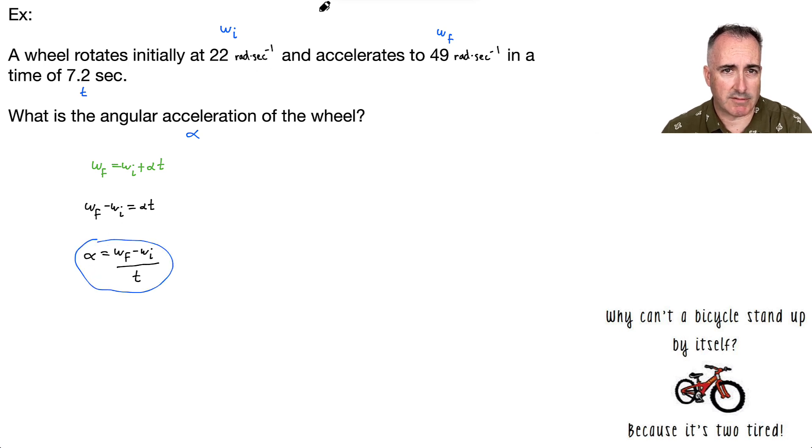Let me actually just put down the values. So that means my alpha, my angular acceleration will be omega f, which is 49 radians per second, minus omega i, which is 22, and divide that whole thing by 7.2.